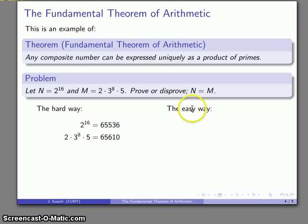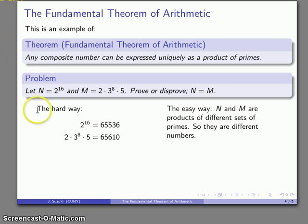On the other hand, there's an easier way of looking at that. The fundamental theorem of arithmetic says if the recipe is different, the numbers are different. And so I look at the recipe. N has 16 2's. M does not. So M and N have to be different numbers.